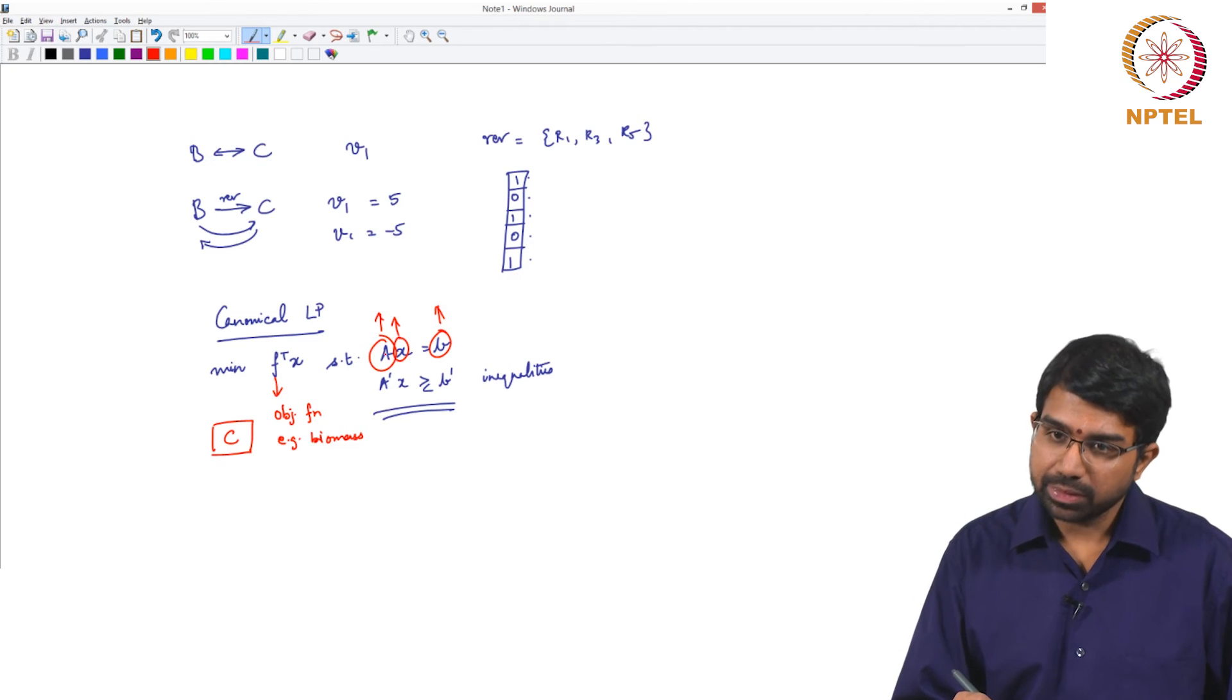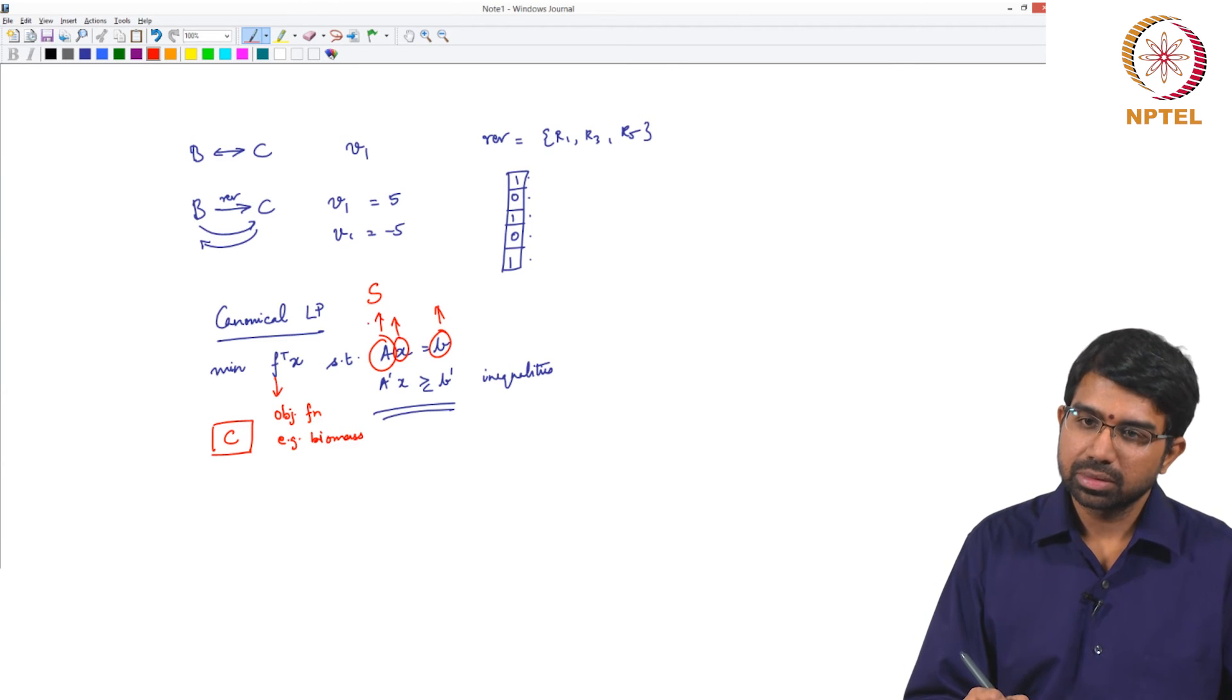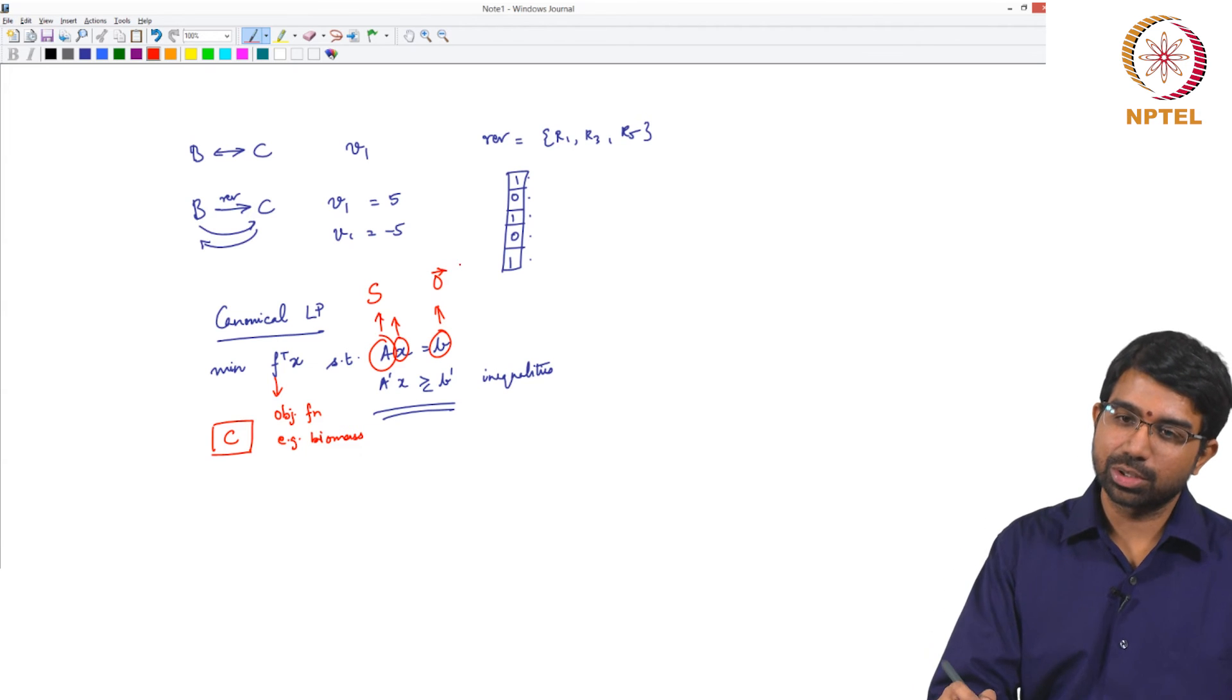Your objective function like biomass which is basically your C. This is the name we gave. And it is useful to know these variable names as well because these are the same things that are used in the MATLAB toolbox for solving flux balance analysis problems. What is A, the equivalent of A? The stoichiometric matrix. Equivalent of B? 0. 0 vector. What is the size of the 0 vector? M cross 1. What is X? V.